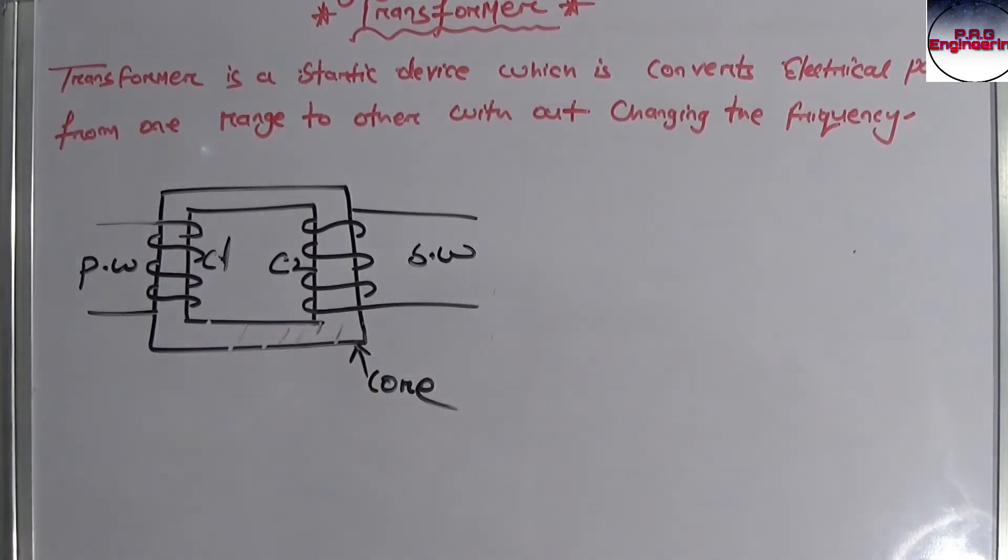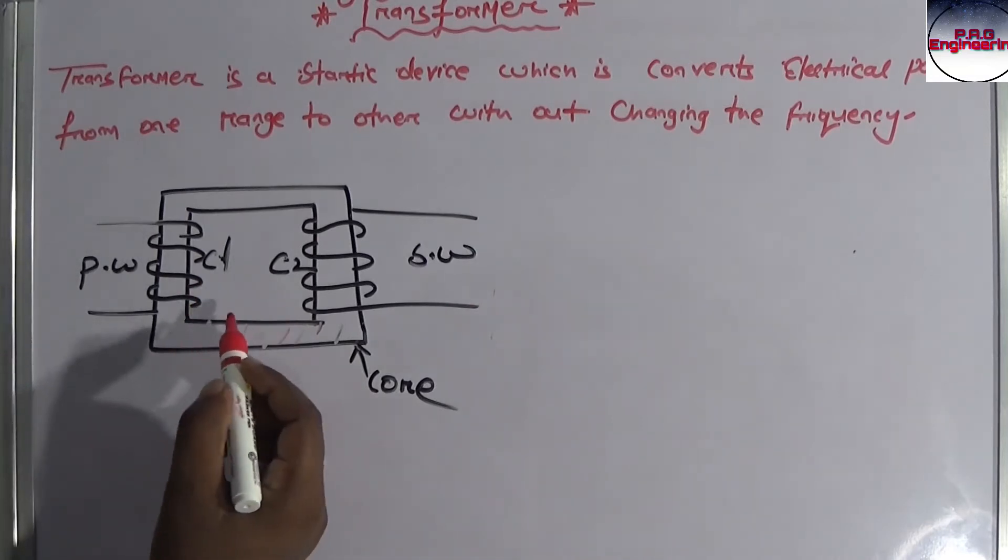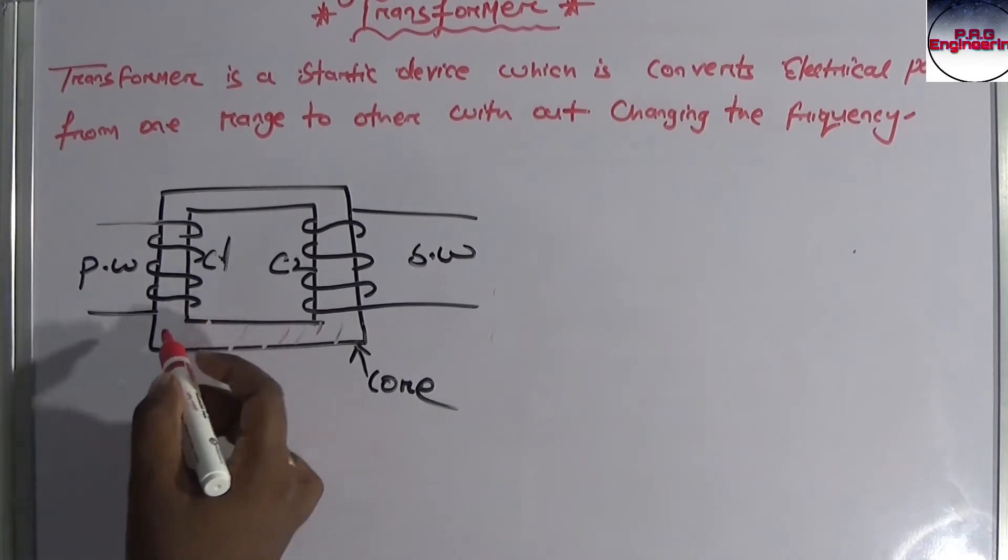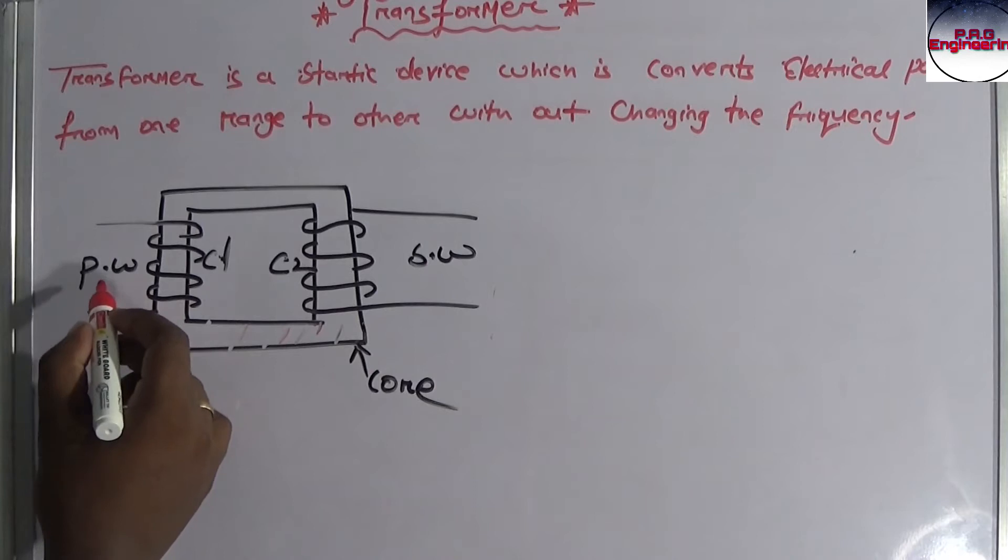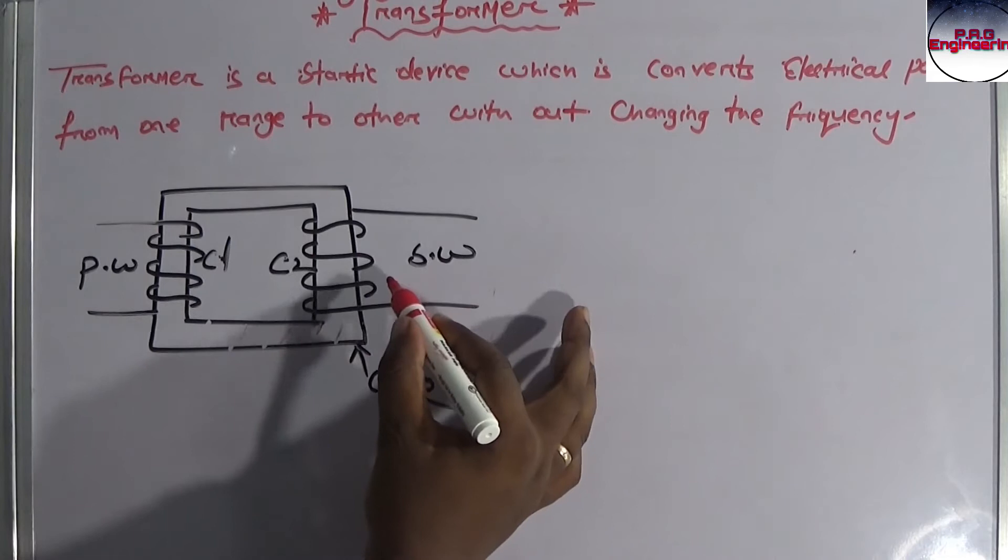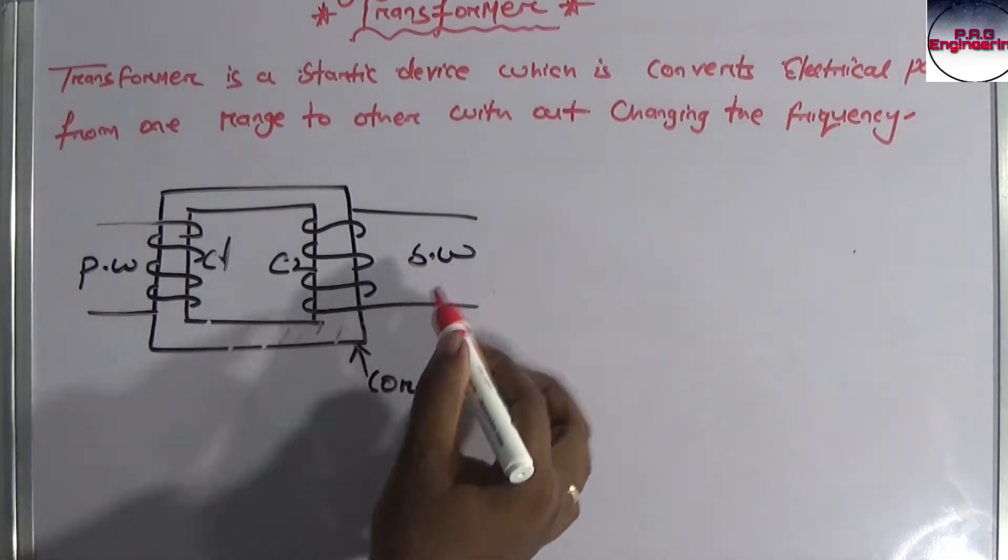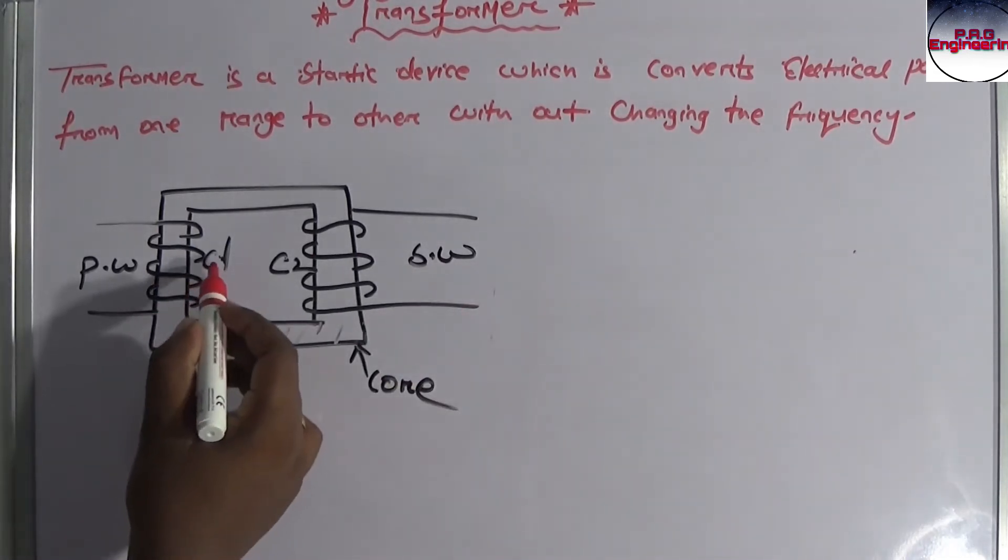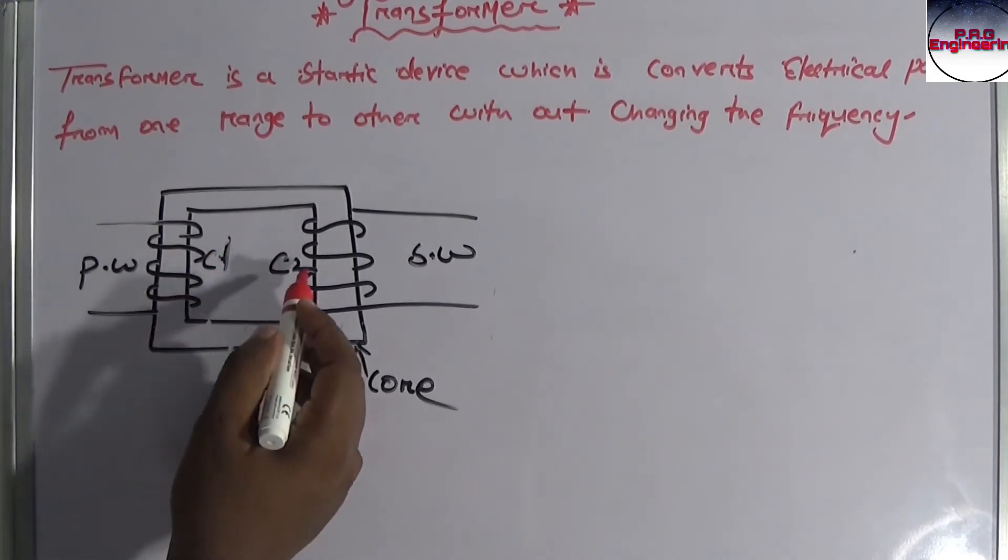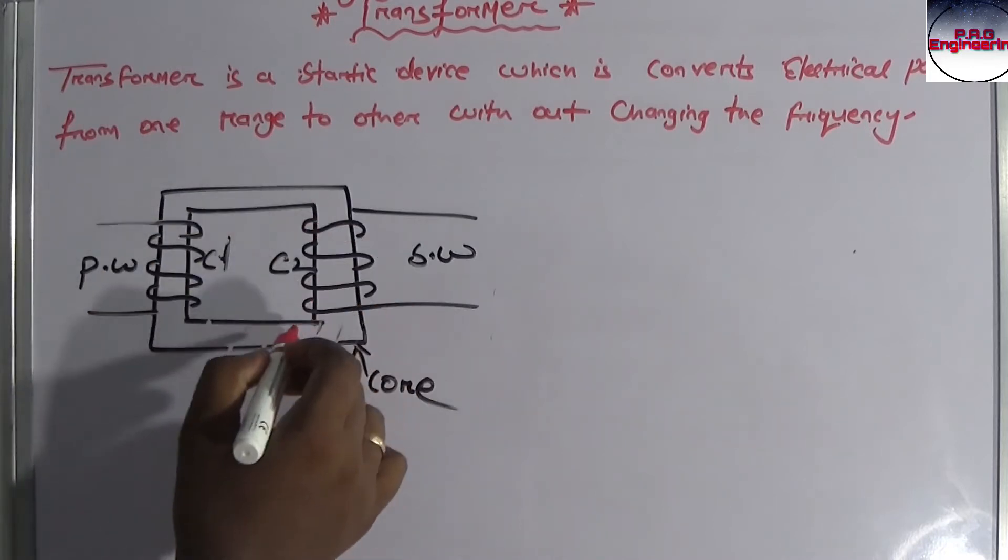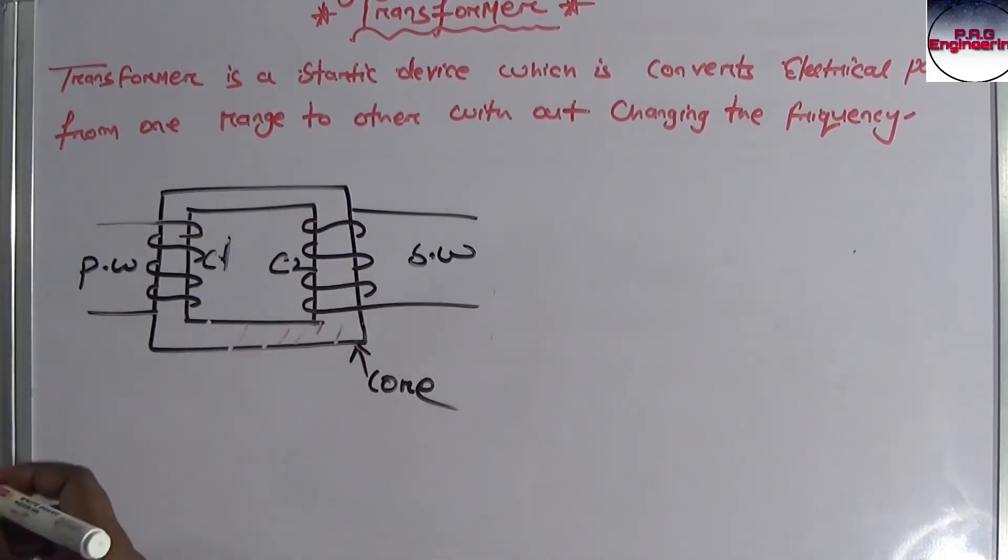This is the transformer diagram. Here we have PW means primary side winding and secondary side winding. Next, C1 means coil one, this is the coil two. This is the body part, the core. This is the core, guys.